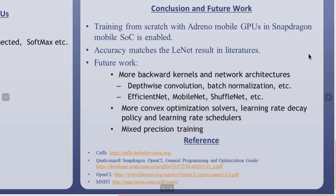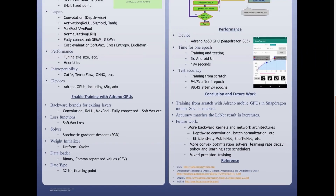In conclusion, we built a training library that can train a network from scratch on Adreno mobile GPU. Even though we show a standalone training example on mobile GPU, the training library can also be used in a distributed training application which collaboratively trains neural networks across many mobile phones and the cloud. The training accuracy of our system matches the state-of-the-art result. To further extend our work, we plan to add back-propagation support for more layers such as depthwise layers, and enable training for more networks such as MobileNet and EfficientNet. We also plan to support more SGD solver variants and enable mixed precision training.